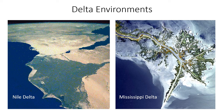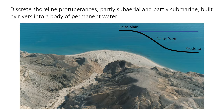Next up in our discussion of coastal siliciclastic environments is the delta environment. Deltas are the interface between river and coastal settings, characterized by a mixture of fluvial, wave, and tidal processes. Deltas are protuberances or bulges in the shoreline built where a river enters into a larger water body — most often the ocean, but also into a lake. The delta setting includes subaerial parts above water called the delta plain, and submarine parts below water including the delta front and the pro-delta.